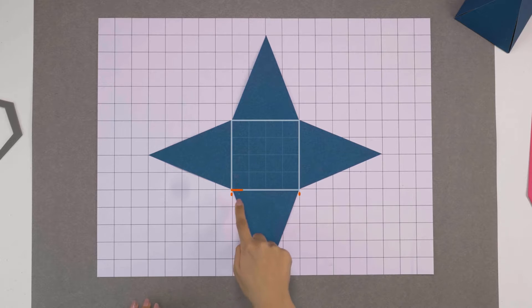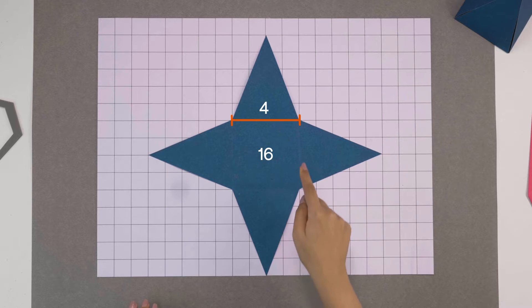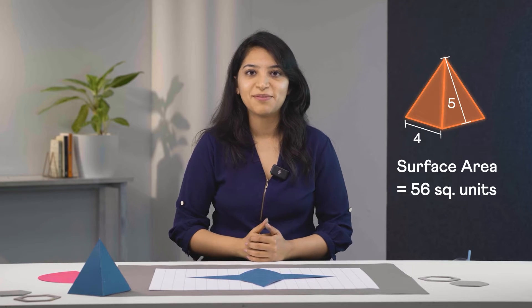The area of this square is 4 times 4, that is 16 square units, and the area of each of the triangles is half times base times height, that is 10 square units. So together their areas add up to 56 square units, and that's the surface area of this pyramid.